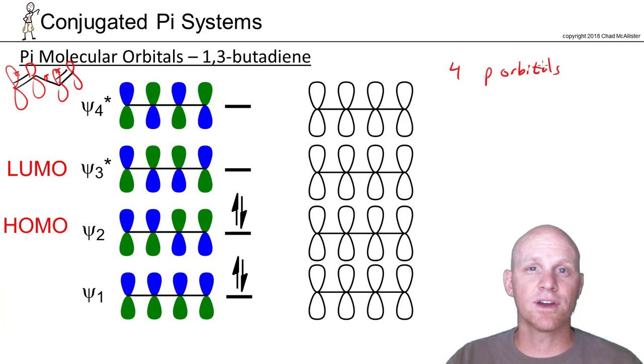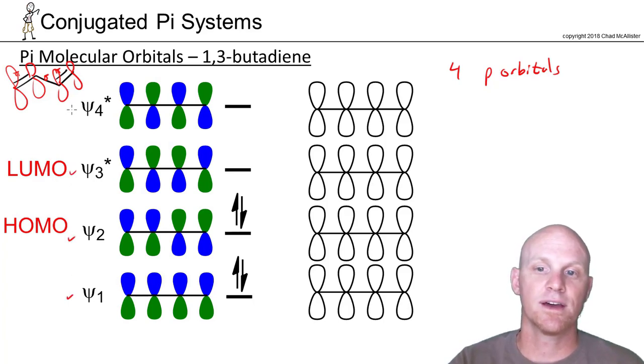And so with four different p-orbitals combining, we're going to create four brand-new molecular orbitals. And that's psi-1, psi-2, psi-3, and psi-4.